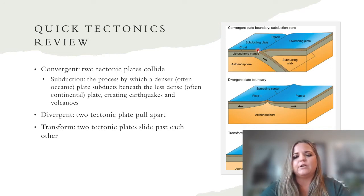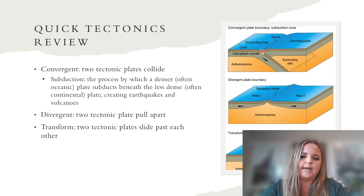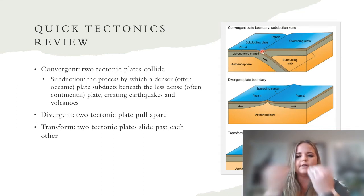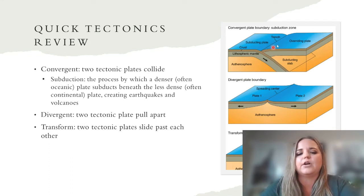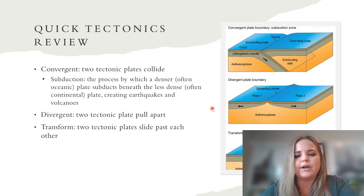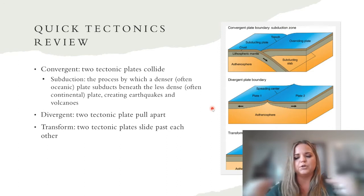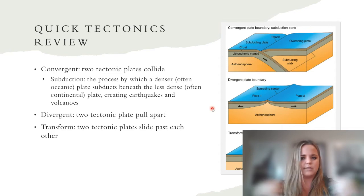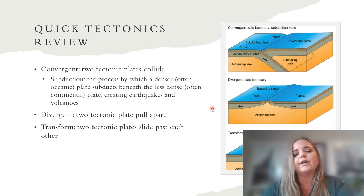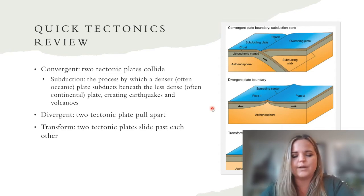Accretion occurs where the two plates are colliding — material is scraped off the top of the subducting plate and that creates our Coast Ranges. This process also generates earthquakes, because when two tectonic plates collide, they create ground shaking.